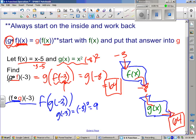And that becomes the input into the f function. So the final answer is f of 9, which means substitute a 9 right there. 9 minus 5 gets us 4. So the final answer is 4.